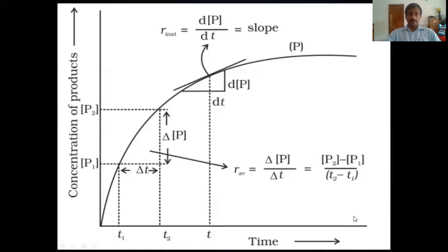As we discussed, instantaneous rate is the rate at a specific moment. To measure instantaneous rate, we use a graphical method. Using an experiment we can measure the concentrations at different time intervals and plot concentration against time.